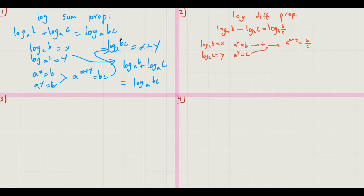Now, we convert it back into logarithm form, which is log base a of b over c equals x minus y. And then substitute these back, just like the last proof, to get log base a of b minus log base a of c equals log base a of b over c.